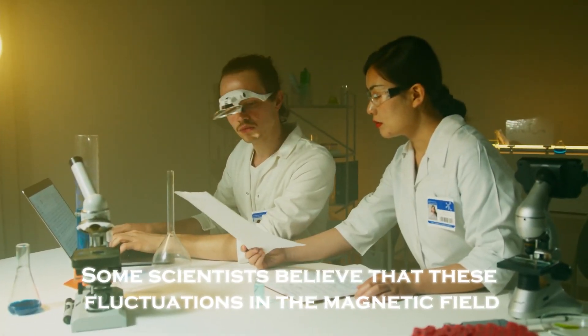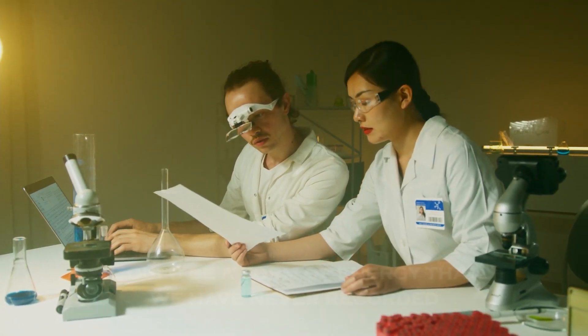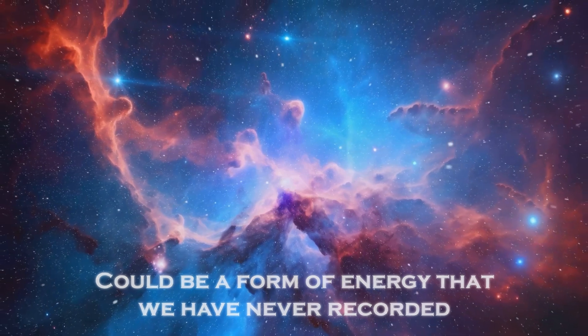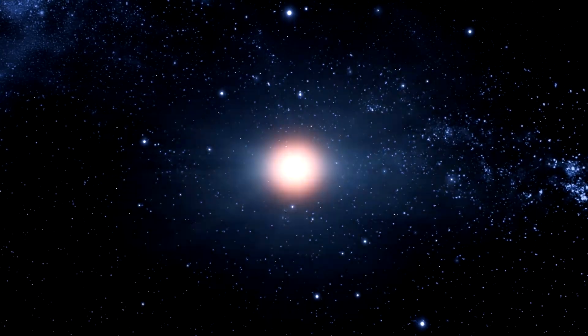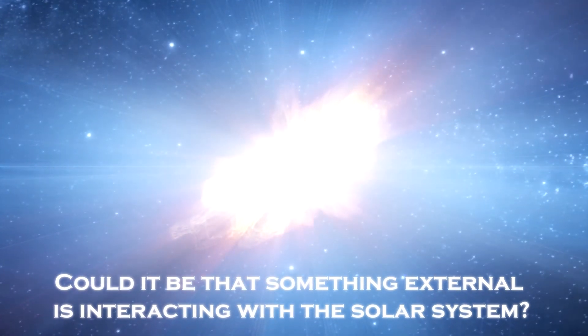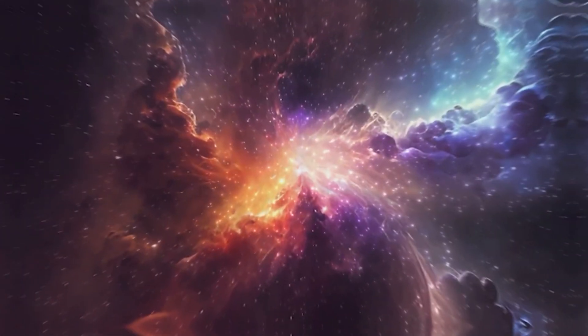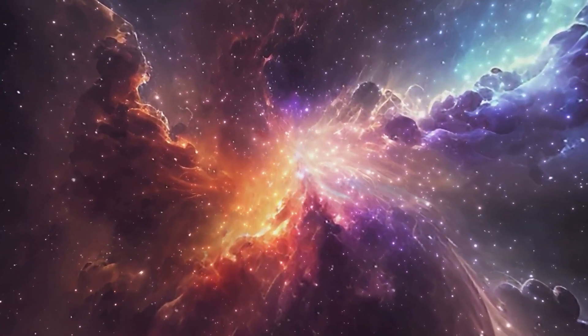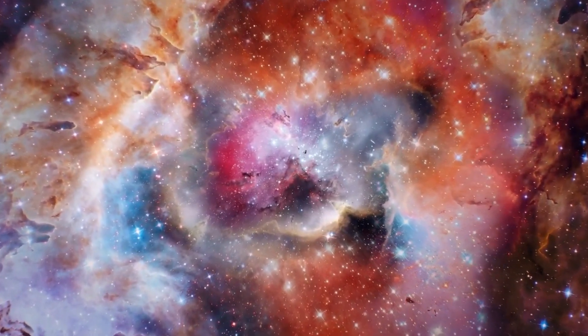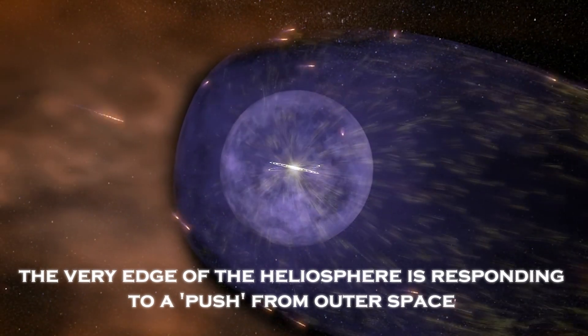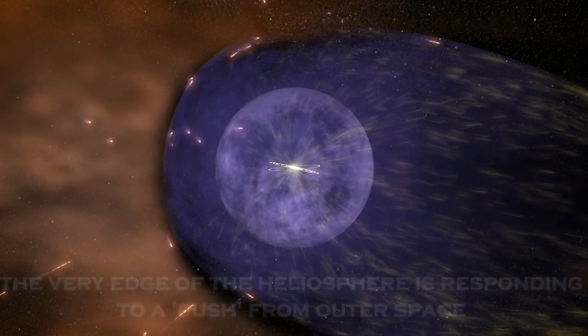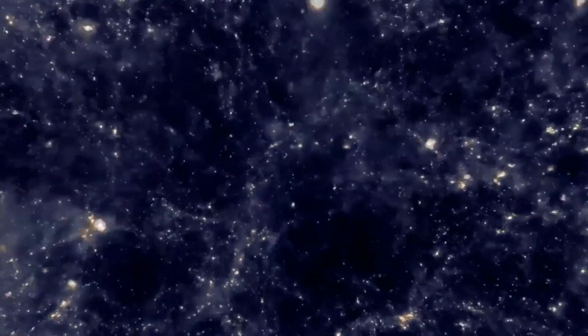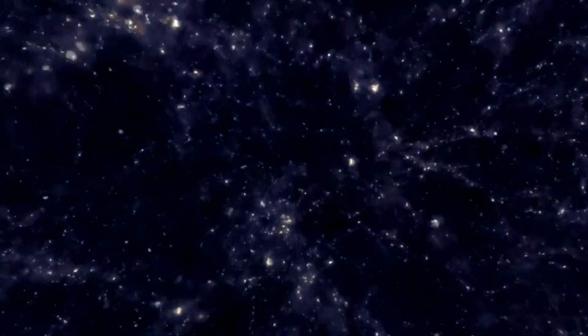Some scientists believe that these fluctuations in the magnetic field could be a form of energy that we have never recorded, a type of echoes from the deep universe. But the theories get even more puzzling. Could it be that something external is interacting directly with the solar system? We are faced with the possibility that these magnetic vibrations are responses to phenomena outside the solar system. It is as if the very edge of the heliosphere is responding to a push from outer space. The signals are weak but repetitive and present patterns we have not observed before.